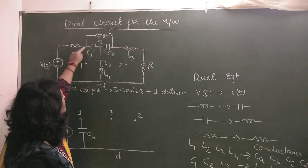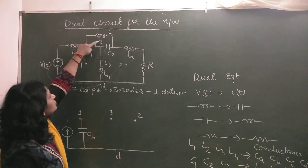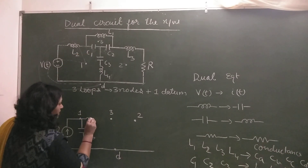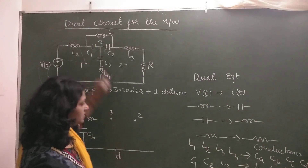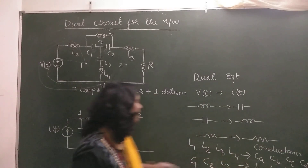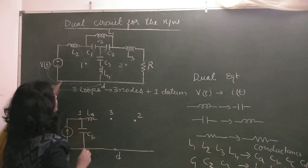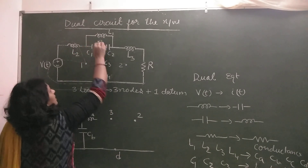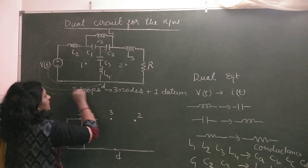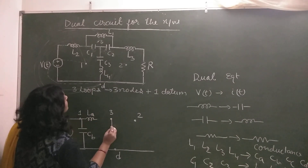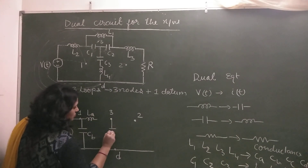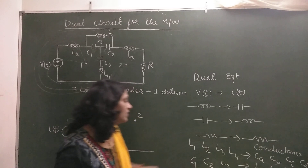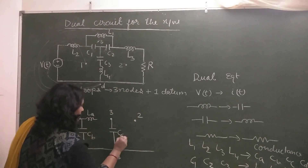The third element, C1, is lying between nodes 1 and 3. So I will draw an inductance between 1 and 3, and for C1 I will use LA. And L1 is lying between node 3 and the datum node. Between 3 and datum there is an inductance, so its dual is a capacitor — for L1 I will write CA.